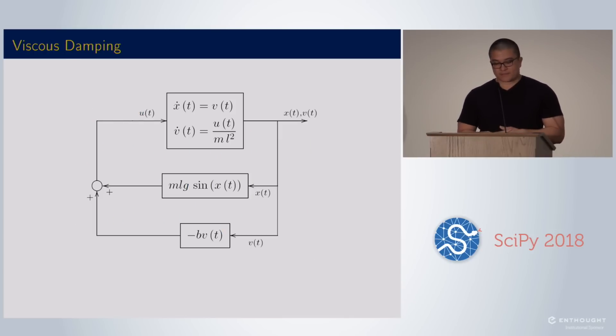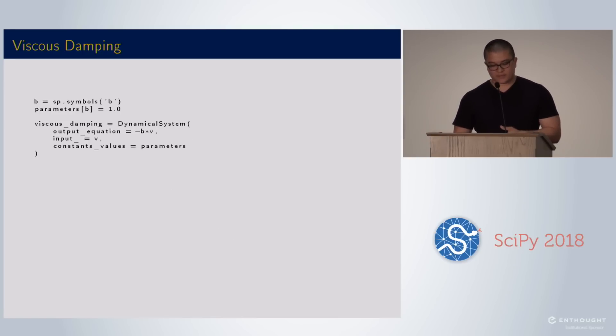Now we can introduce viscous damping. I'm going to keep the nonlinear gravity and add the damping. It's easy to create the viscous damping system. But then the inertia only has one input, the force. So we need someone to help us out.